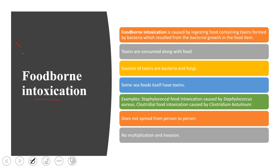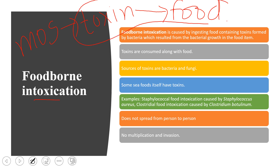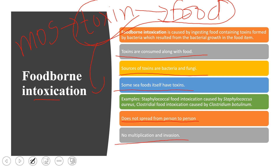In foodborne intoxication, microorganisms synthesize toxins in the food, and humans consume both the food and the toxins. Sources of toxins include bacteria and fungi. Some seafoods contain toxins naturally, without requiring bacteria or fungi. Foodborne intoxication does not spread from person to person because only the toxin — not live microorganisms — is involved, so there is no multiplication or invasion of the intestinal lining.